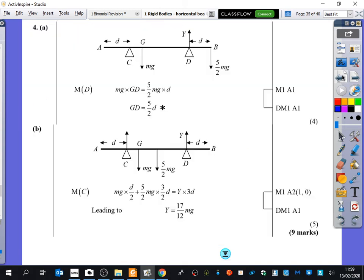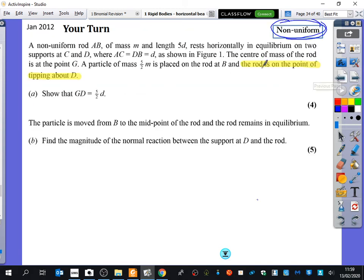So you can, in theory, go back to do this previous question here. It's on the point of tipping about C. So that means that the tension in C is zero and can be completely ignored when you draw the diagram for that second question.